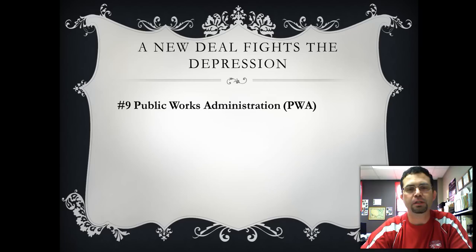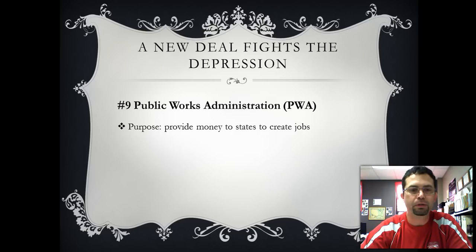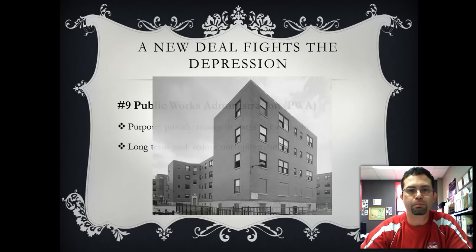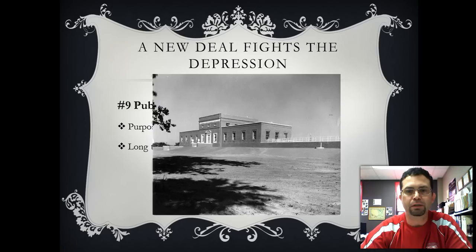The Public Works Administration is part of the National Industrial Recovery Act. The purpose of the PWA was job creation, pure and simple — not a handout, but creating jobs and building up self-esteem. The PWA should not be confused with the WPA, which comes up later. The PWA is responsible for building schools and community buildings — make a note: PWA, schools, and community buildings. The long-term goal was to reduce unemployment; 25% unemployment was the problem of the Great Depression. Examples of PWA projects include public housing, a dam in Oregon, and a school in Wichita, Kansas.